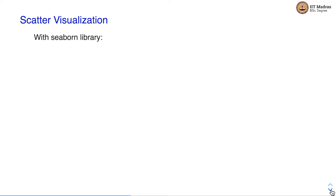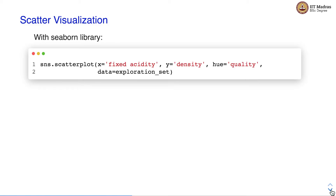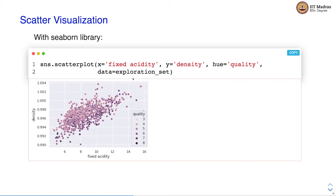There are different visualization techniques we can use. The first one is scatter visualization. We can use the Seaborn library for scatter visualization — there is a scatter plot function in the library that we can use. We specify the x-axis, the y-axis, and the data for visualization. The scatter plot prints the data as a graph with fixed acidity on the x-axis and density on the y-axis, where each point is a training point assigned a color based on the quality of the wine.